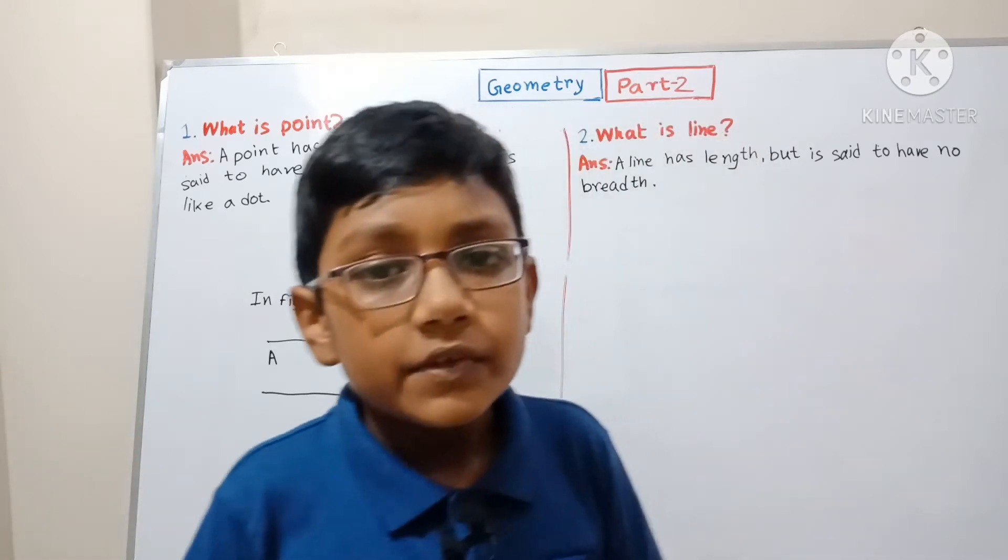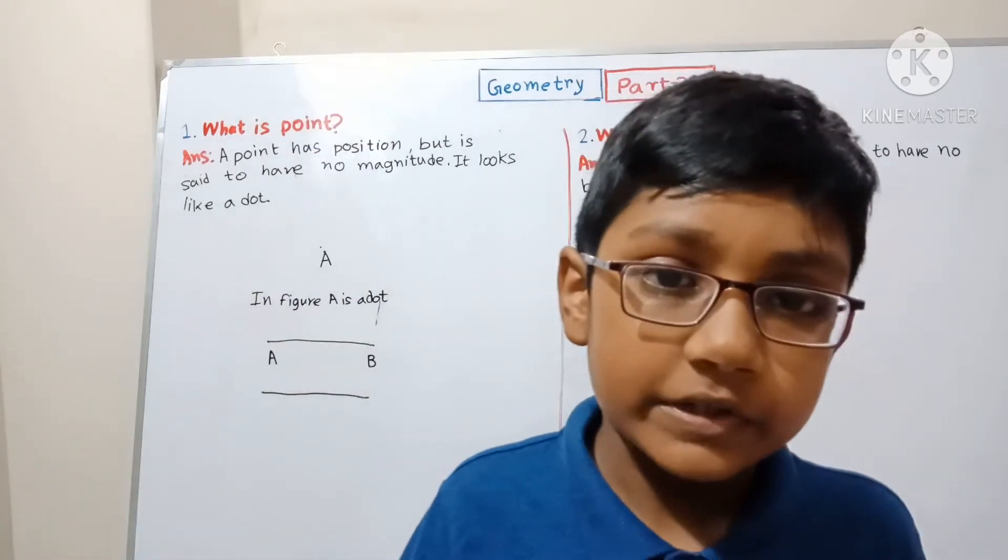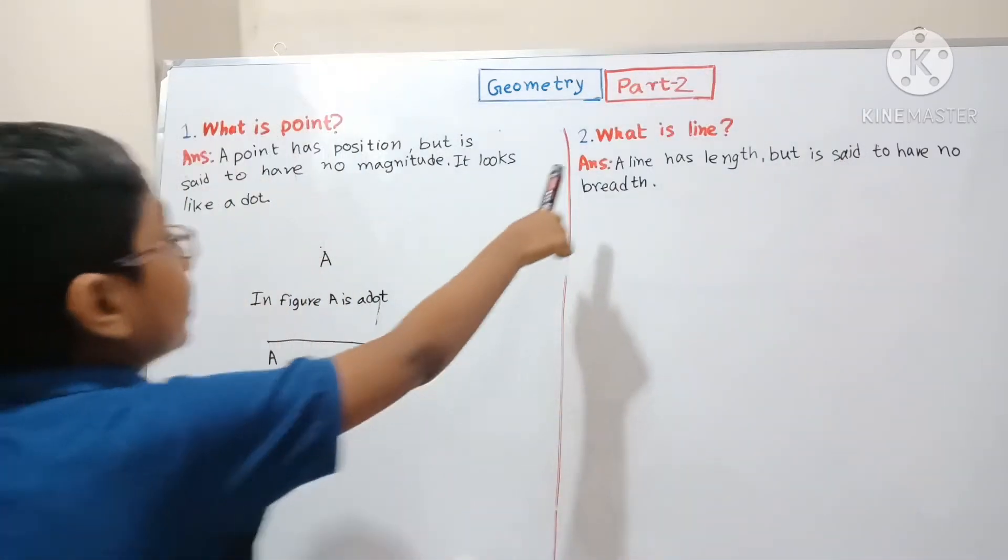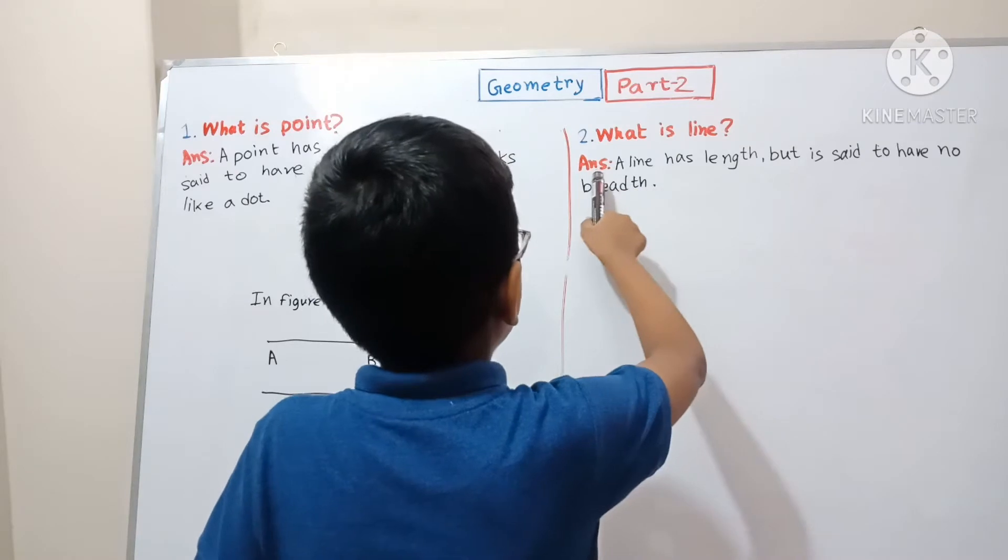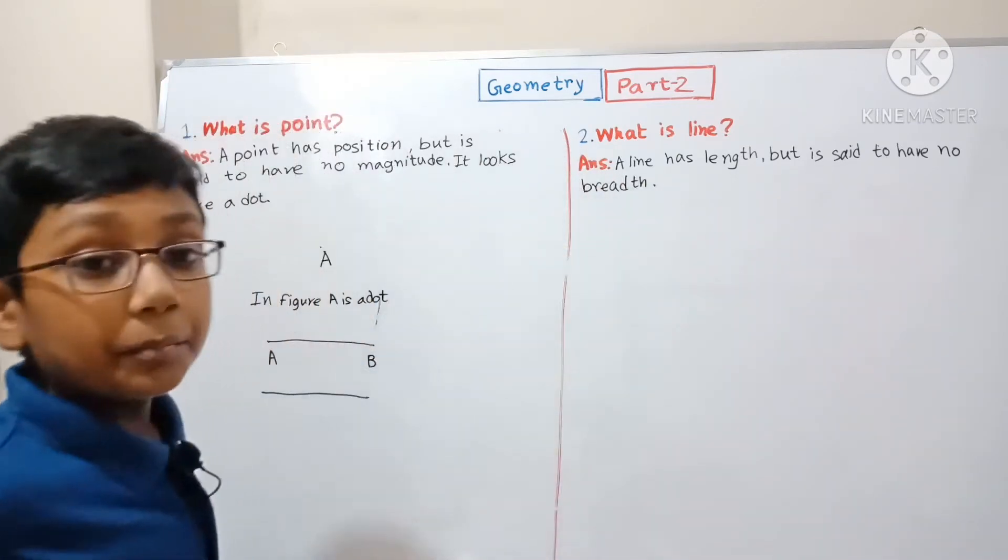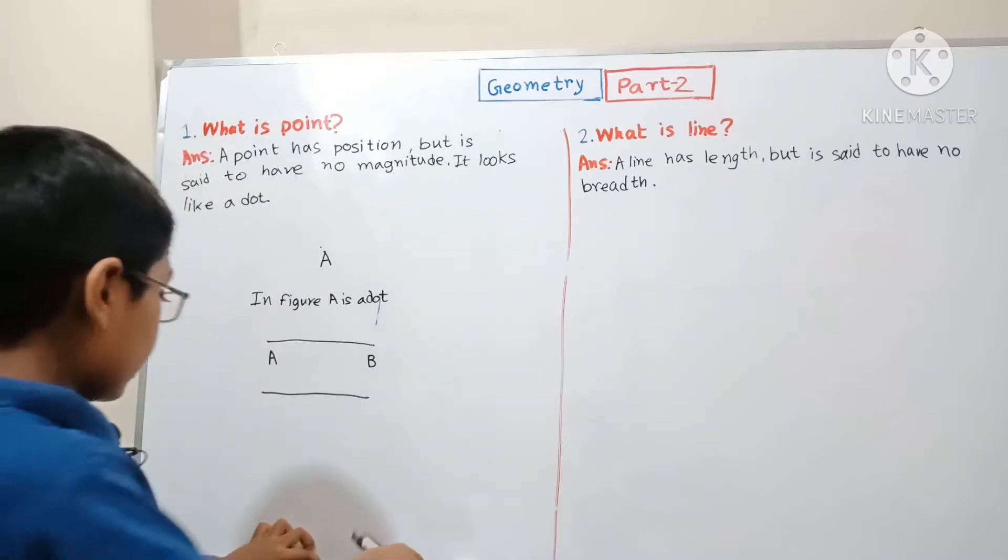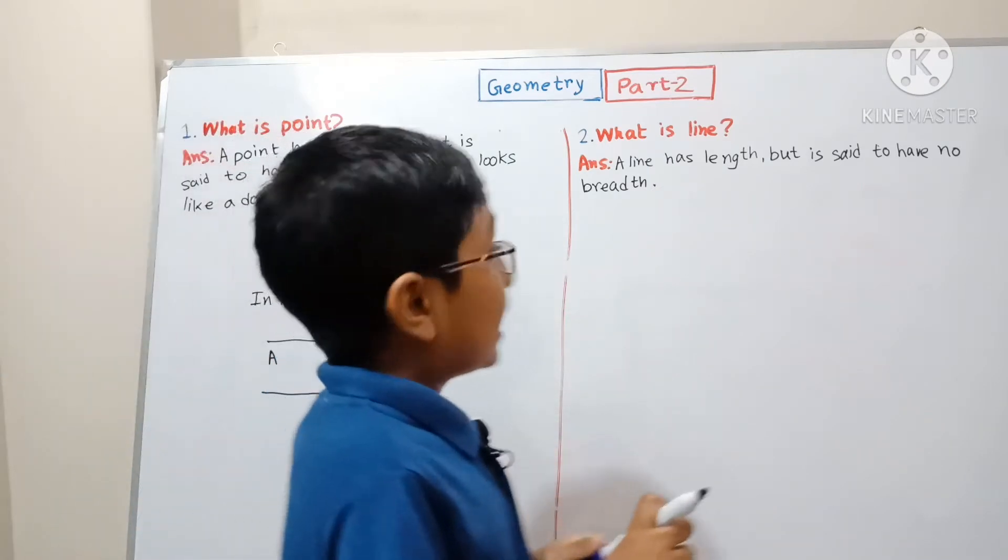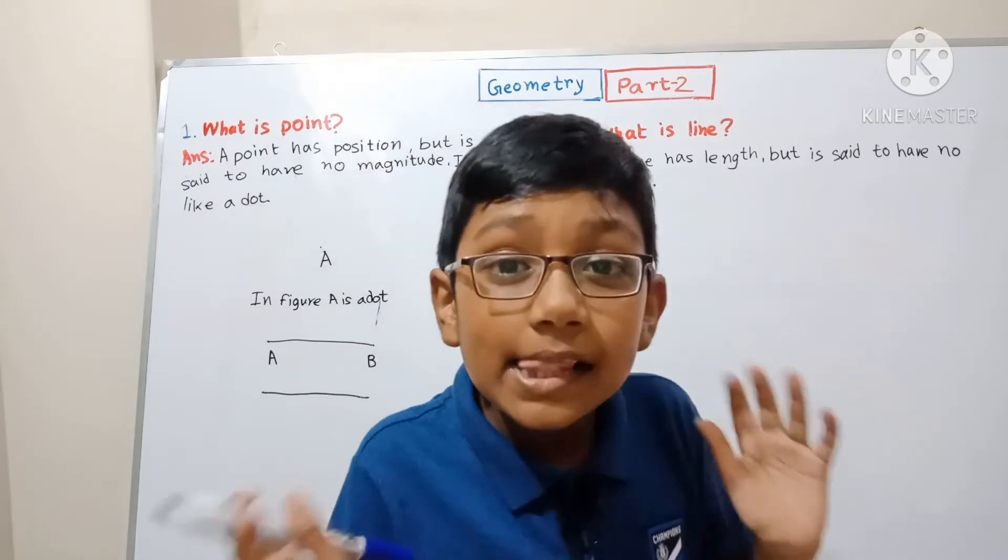Let me tell you what's a line. What is a line? A line has length but is said to have no breadth. Let me tell you how to draw a line.